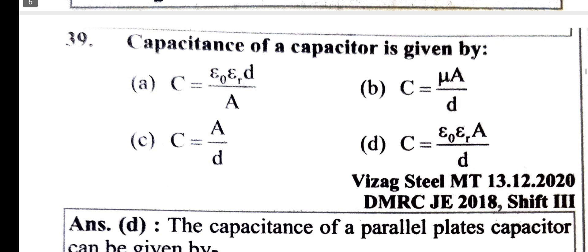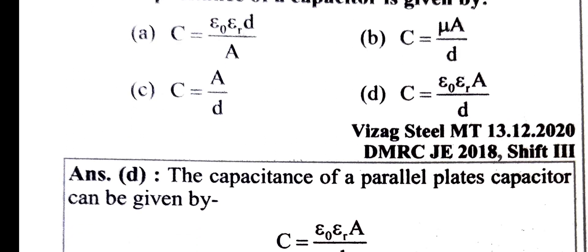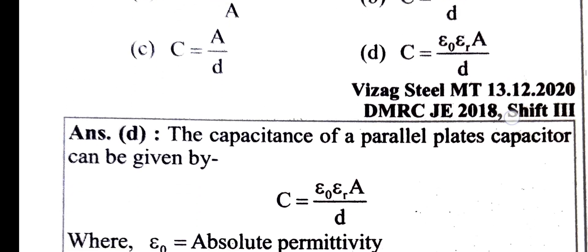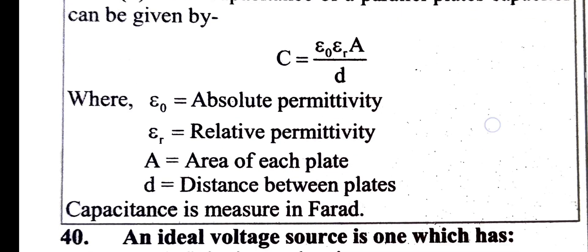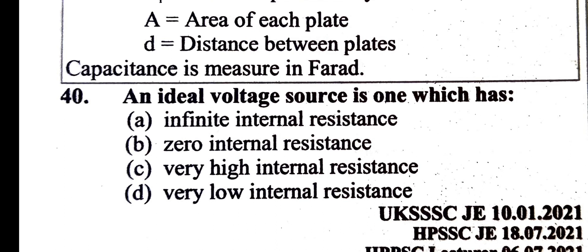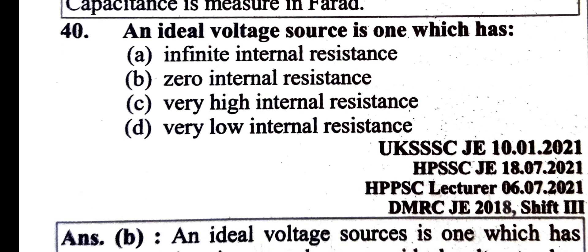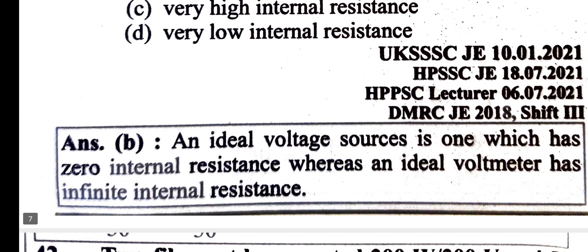Capacitance of a capacitor is given by C equals ε₀ εᵣ A by D. An ideal voltage source is one which has zero internal resistance.